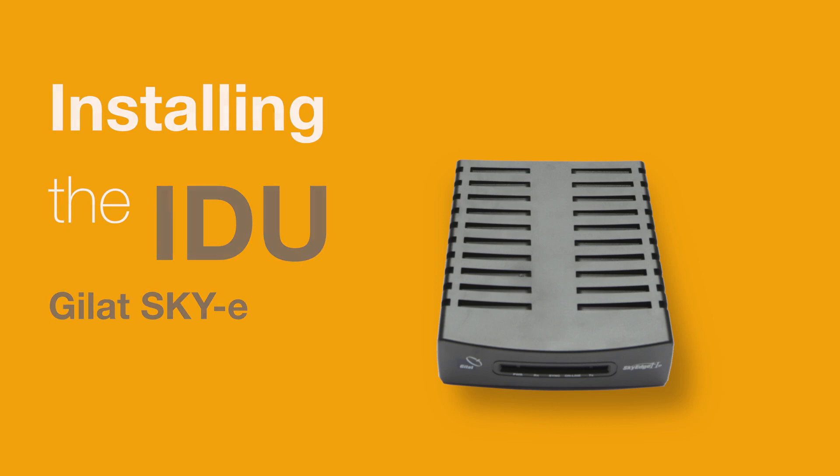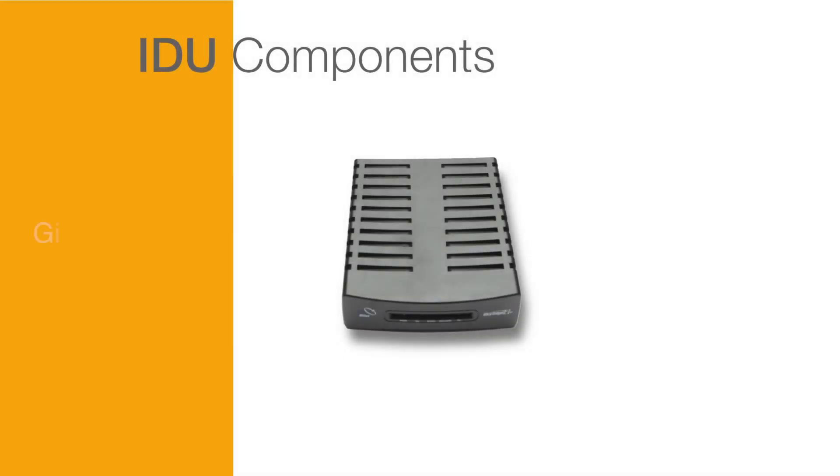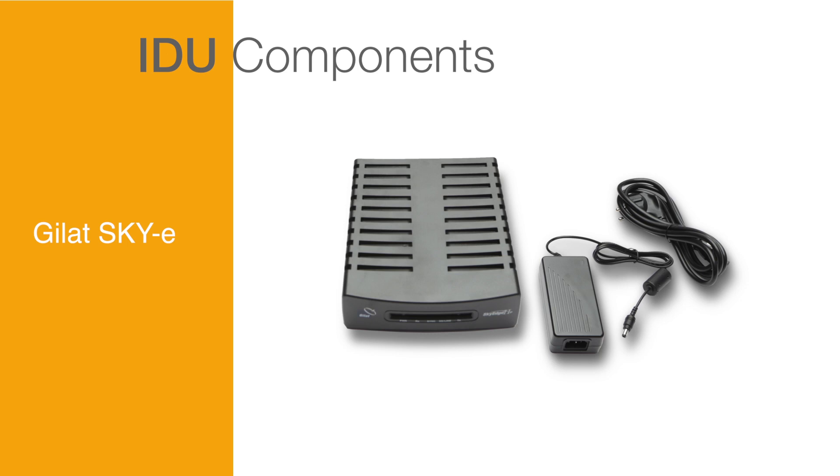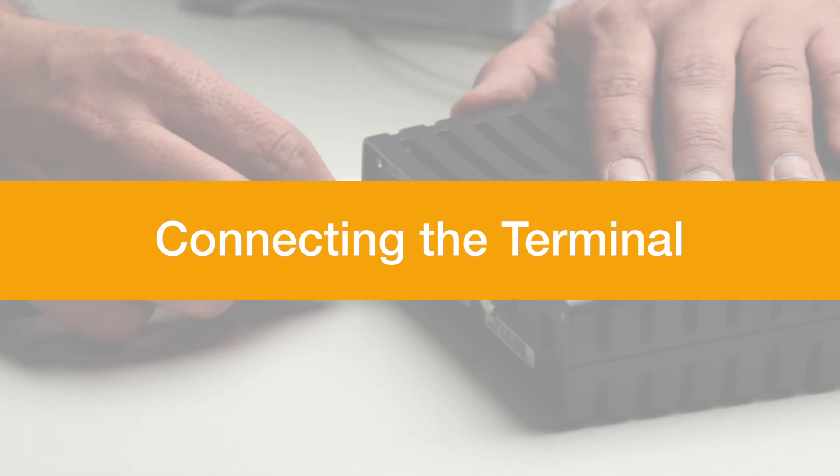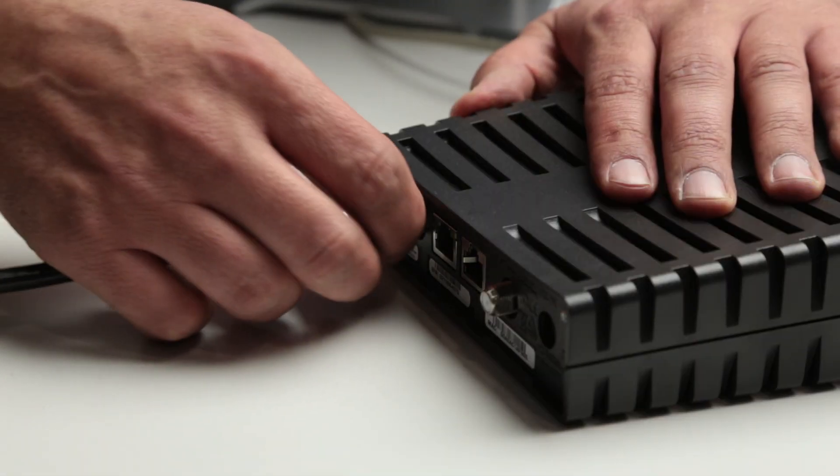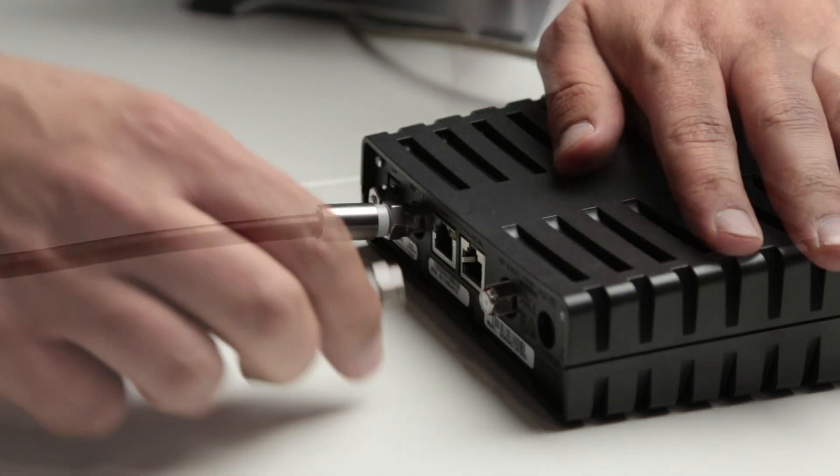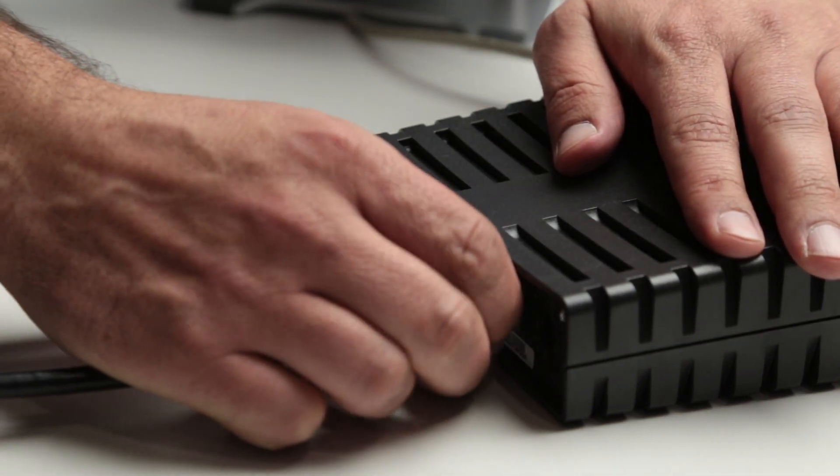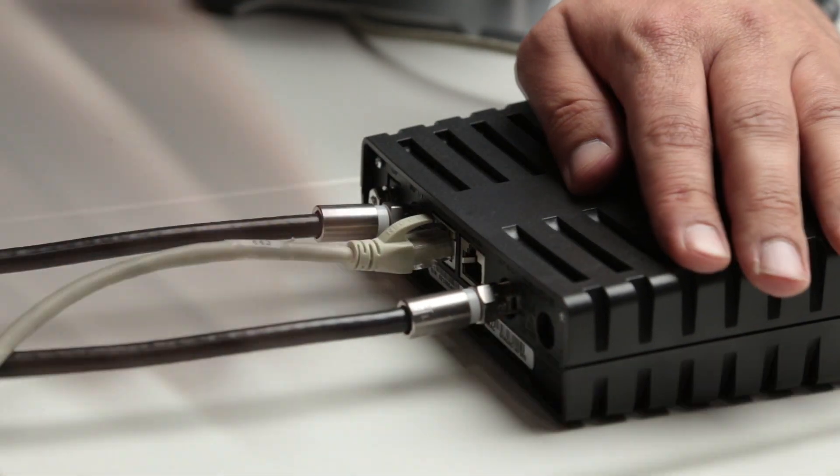Installing the IDU. IDU components: for this configuration, the IDU is made up of a Gillette SkyE VSAT terminal. Connecting the terminal: the IDU has two F connectors for the TX and RX cables that come from the ODU, an Ethernet interface for connecting with the client's computers, and a power cable.